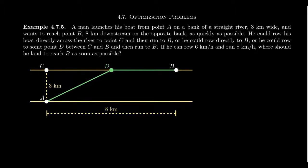For this first example, imagine that a man launches his boat from point A on the bank of a straight river, three kilometers wide, and wants to reach point B, which is eight kilometers downstream on the opposite bank as quickly as possible. This athlete's in a race, and part of the race is he has to cross this river, and he has to row across the river in order to do it.